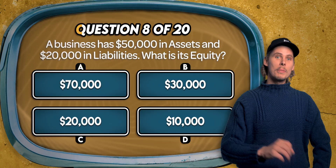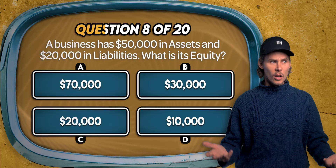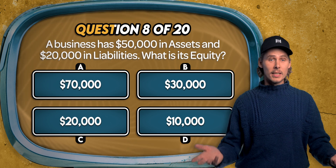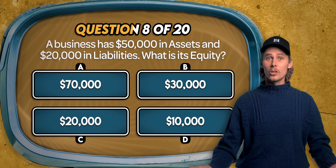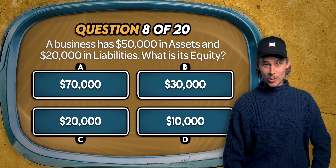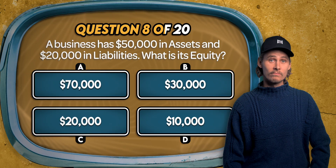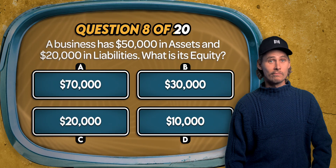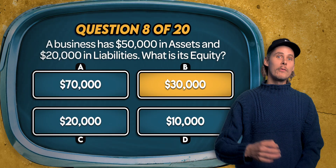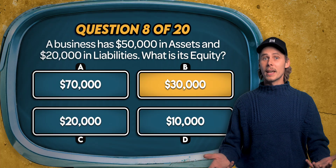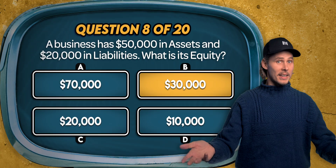Question 8. A business has $50,000 in assets and $20,000 in liabilities. What is its equity? Is it $70,000, $30,000, $20,000, or $10,000? It's B. If we rearrange the accounting equation, we get equity equals assets minus liabilities, or net assets. $50,000 in assets minus $20,000 in liabilities is $30,000 in equity.